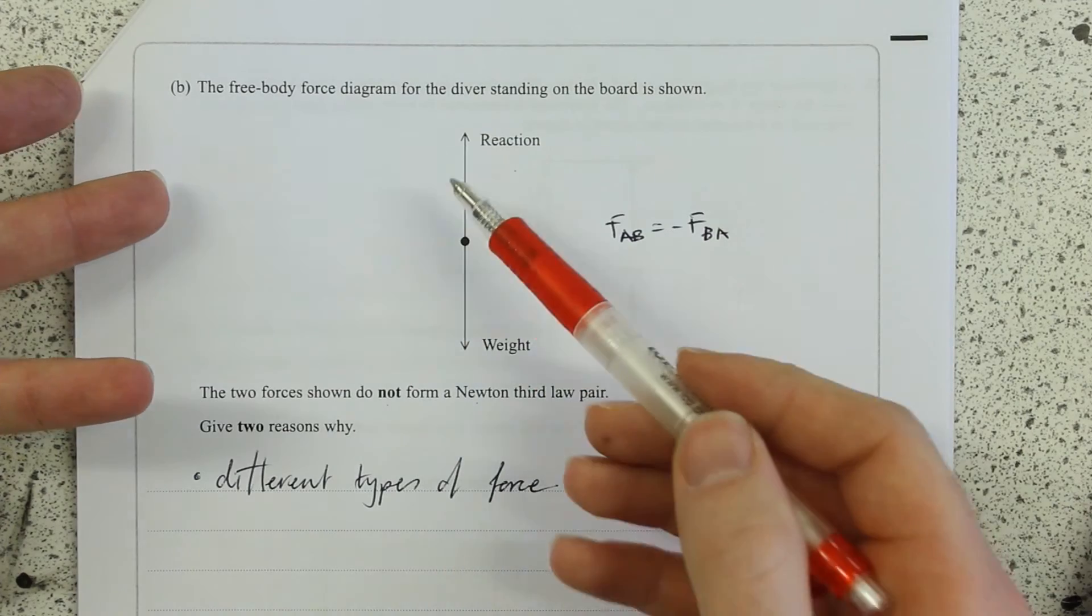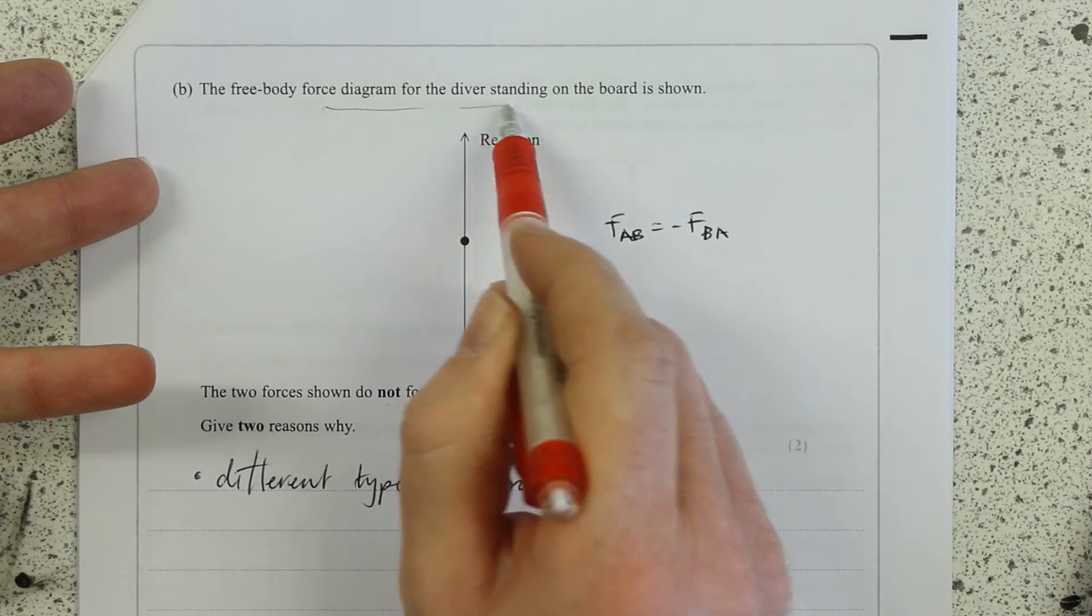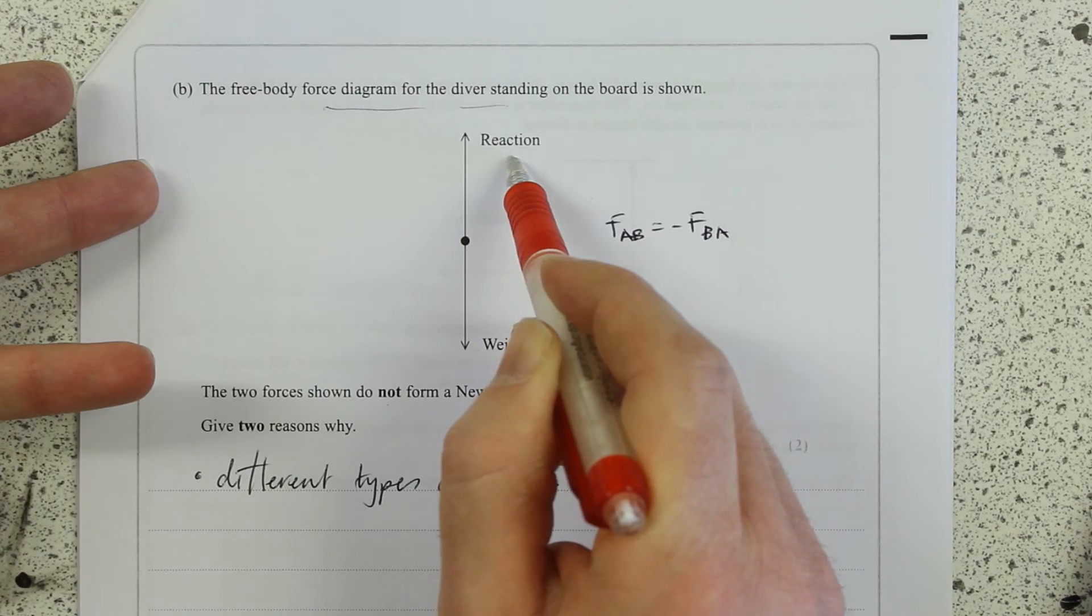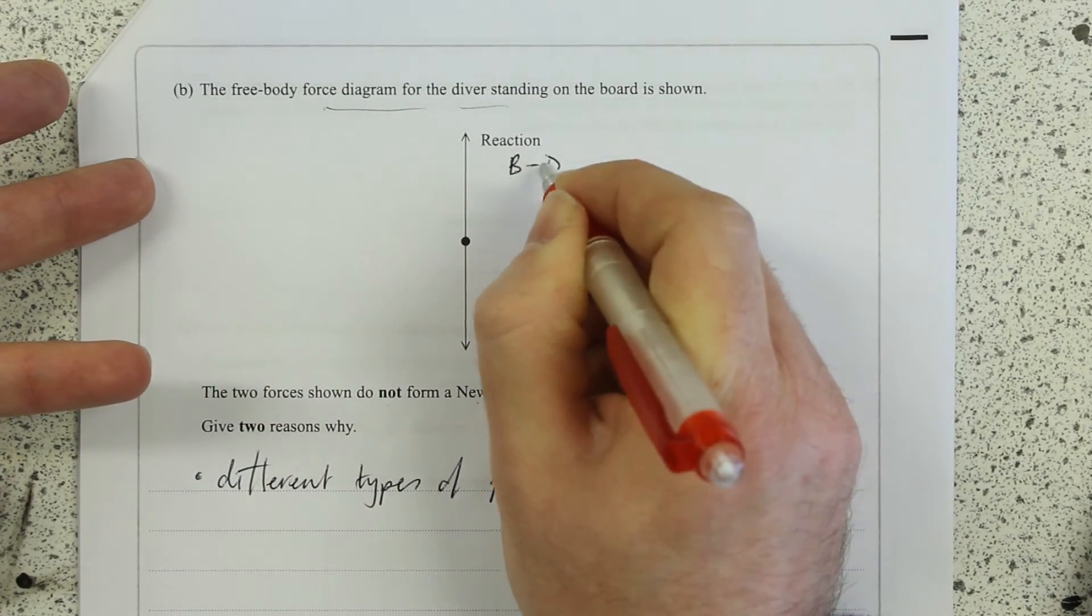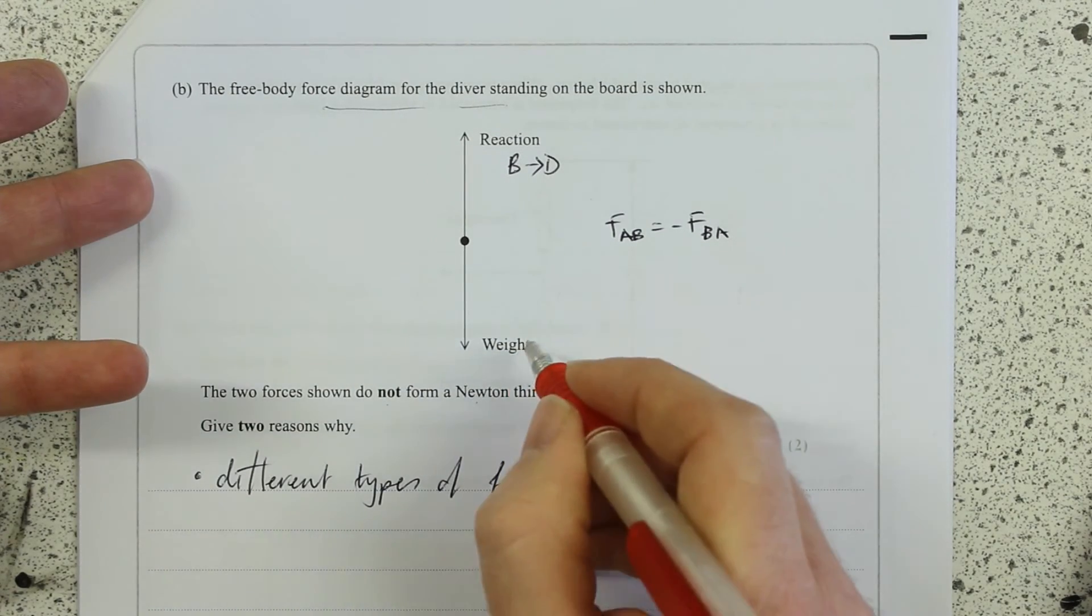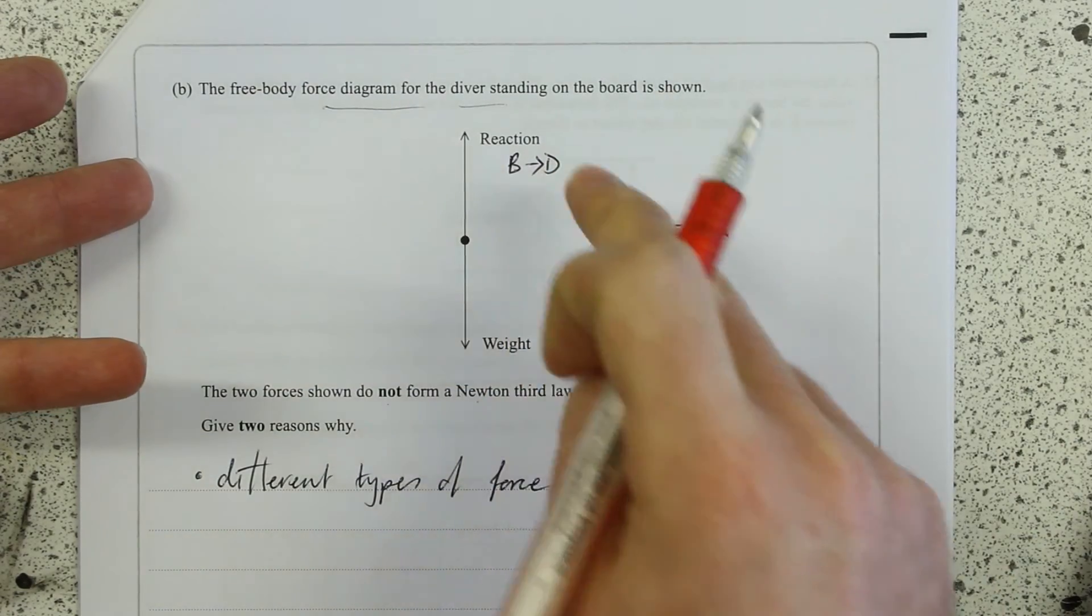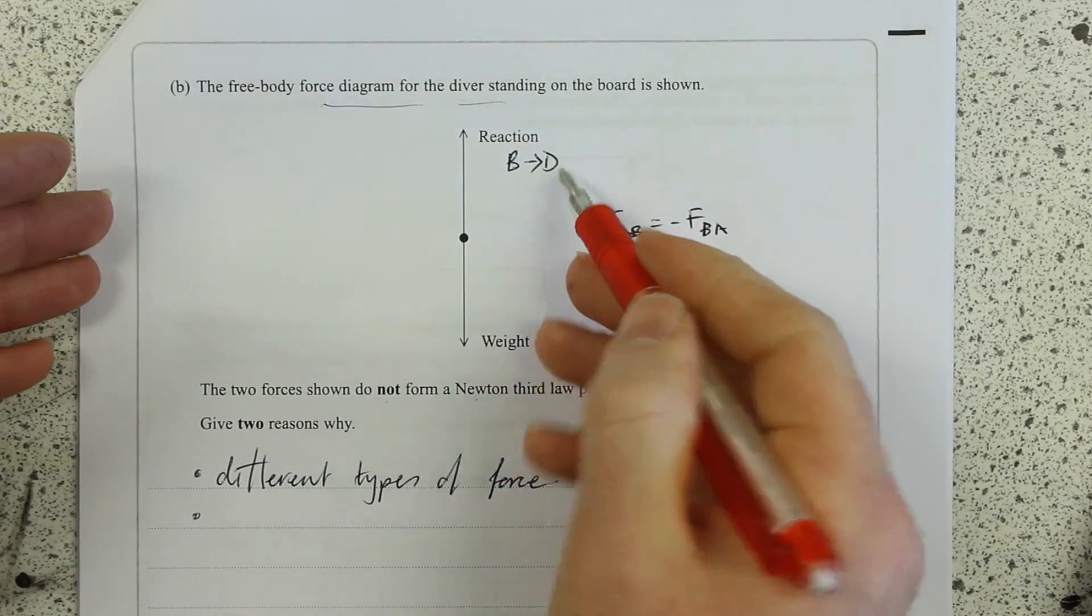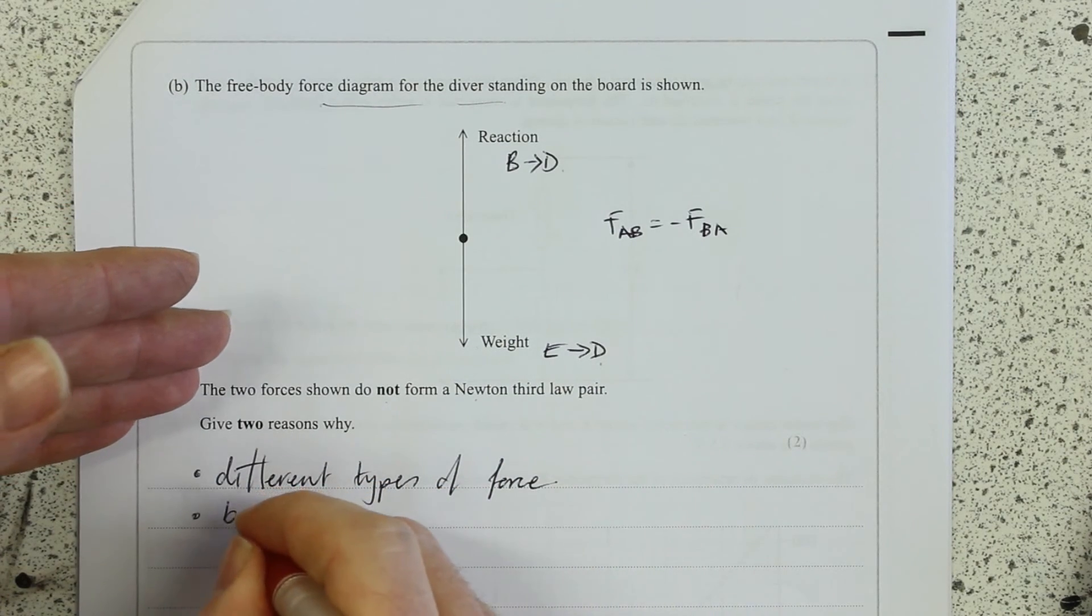Is it a force from A to B or from B to A? So this is a force diagram for the diver standing on the board. The reaction force is the board on the diver, and the weight is actually the gravitational force of the earth on the diver. So no, they're not A, B, B, A, are they? It's actually both forces are acting on the diver. So they're both acting on the same object.